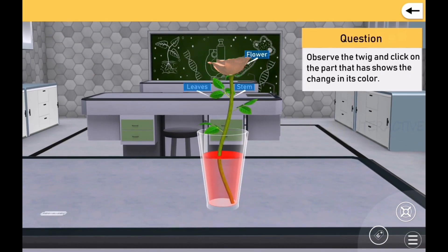شاکھا کا نیریکشن کریں اور اس حصے پر کلک کریں جس حصے کے رنگ میں پریورتن دکھتا ہے۔